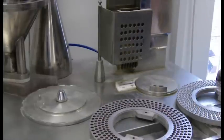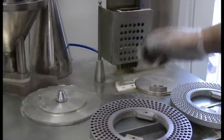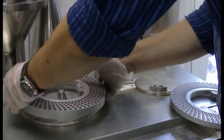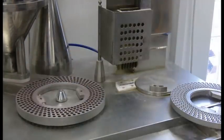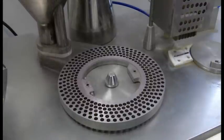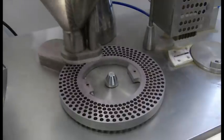This bottom section is then placed into the filling part of the machine. Once the plate has been placed into this section of the machine, the operator can switch on the filling.